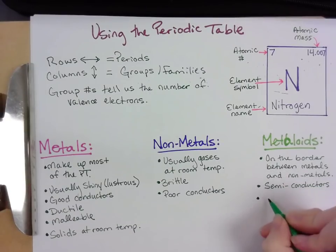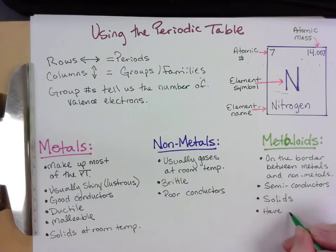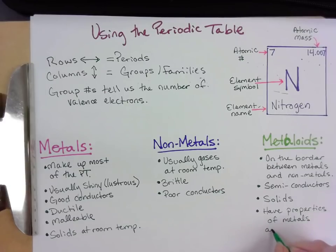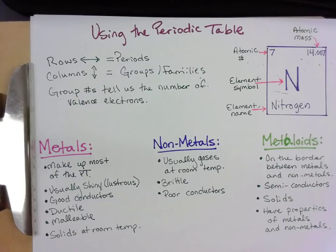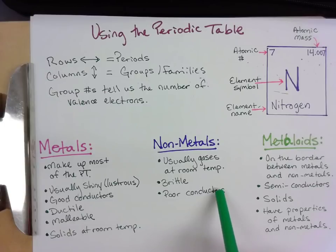Metalloids are usually used in things like computers, where you want electricity to move through them but you don't want it to short out. Metalloids are usually solids and they have properties of both metals and non-metals — they're in between. So three categories: metals, non-metals, and metalloids. Metals are shiny, good conductors, can be stretched and flattened, and are solids making up most of the periodic table. Non-metals are usually gases, brittle, and don't conduct heat and electricity. Metalloids are somewhere in between — they're semiconductors, usually solids, with properties of both.